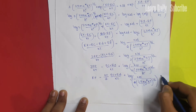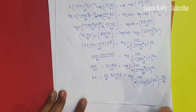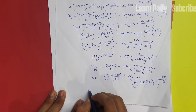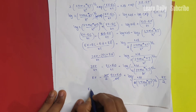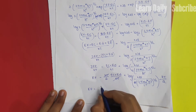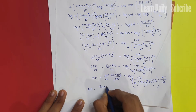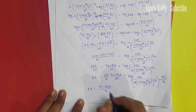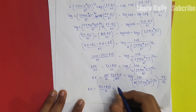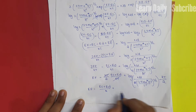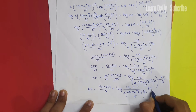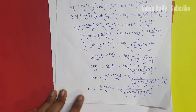Okay, kT cancels. Ef equals (Ec plus Ed) by 2 plus the same value. Ef is equal to (Ec plus Ed) by 2 plus log(Nd/8) by 2.